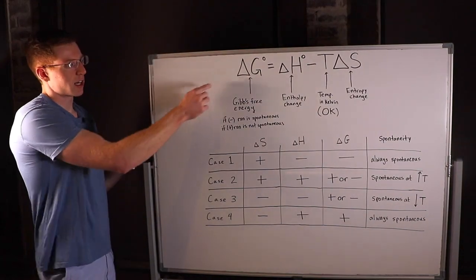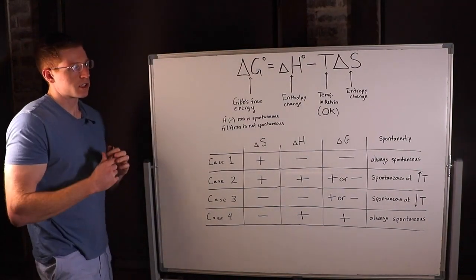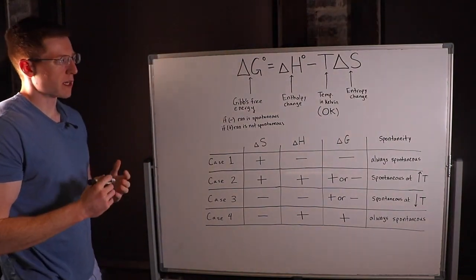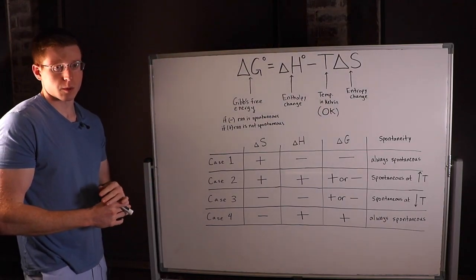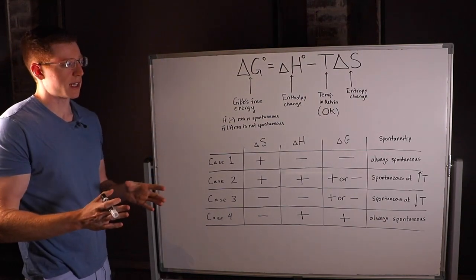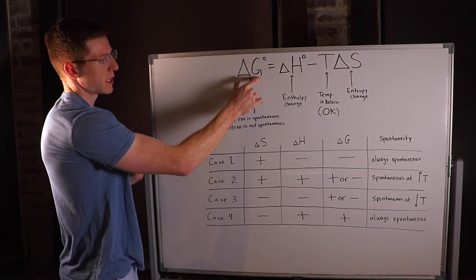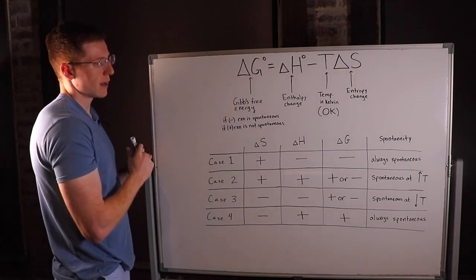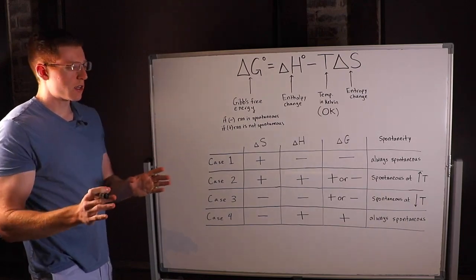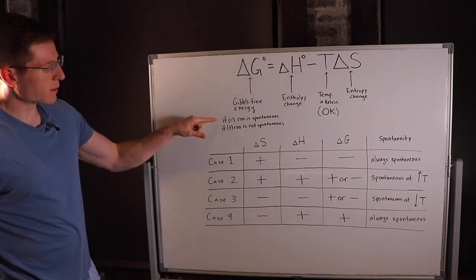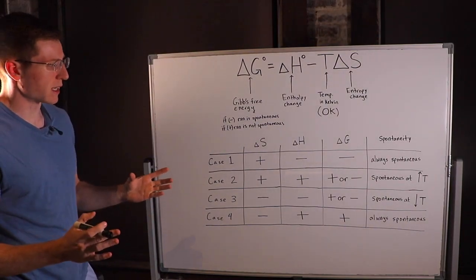In this video I'd like to talk about this equation up here. This equation basically allows you to determine whether or not a reaction will proceed spontaneously, and it does that using this term here, delta G — Gibbs free energy. If Gibbs free energy is negative, the reaction is spontaneous.